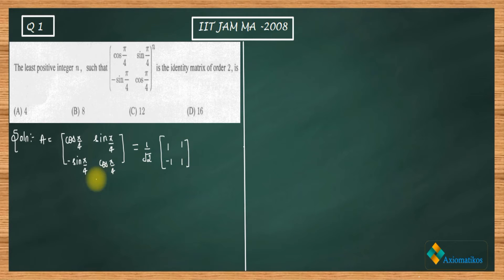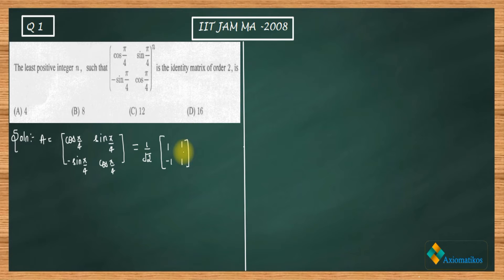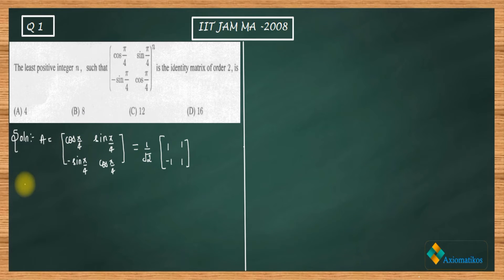The options are 4, 8, 12, and 16. To find the least n, first check whether n = 4 works by computing A⁴. Then check A⁸, A¹², and A¹⁶ if needed. Since A⁴ = A² · A², we first need to calculate A².